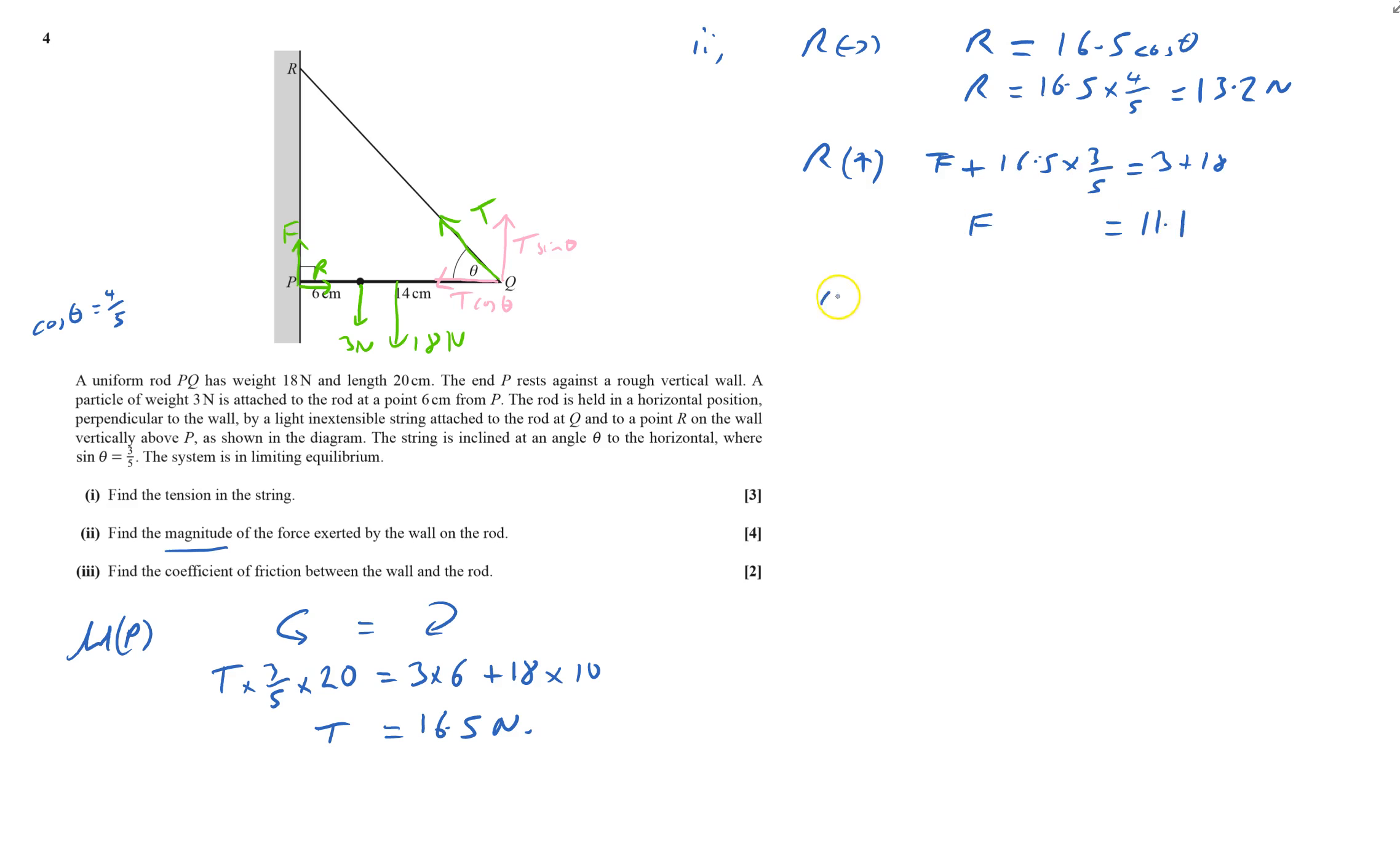The magnitude equals square root of 11.1 squared plus 13.2 squared, which is 17.2467... or 17.2 newtons to three significant figures. That does part two.